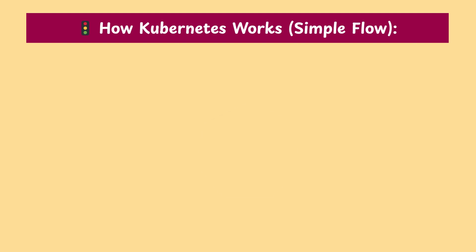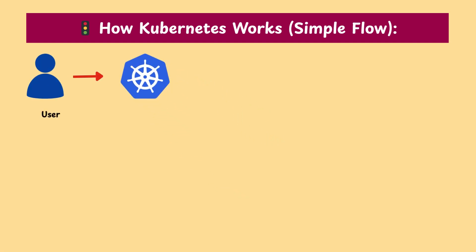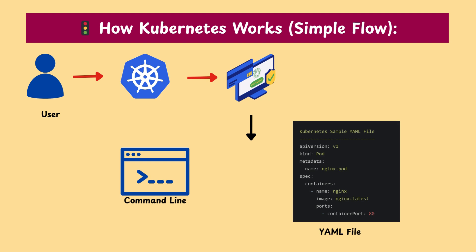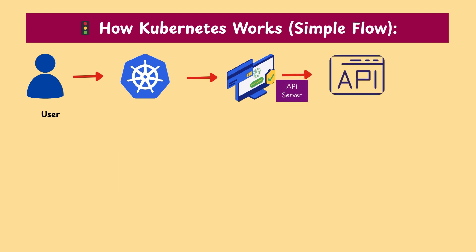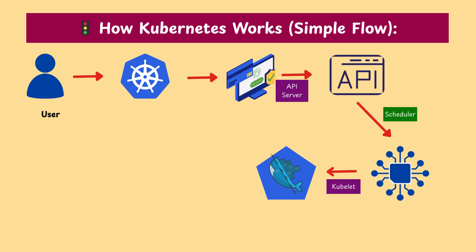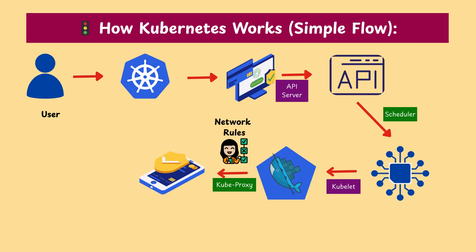Now let's see how Kubernetes works. You send a request to Kubernetes to deploy your application through kubectl or a configuration file like YAML. Second, the API server processes the request. Third, the scheduler picks a worker node with enough resources. Fourth, the kubelet on that node starts the container inside a pod. Fifth, kube-proxy ensures the application is accessible via networking rules.